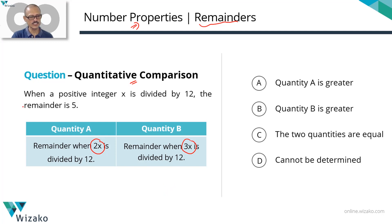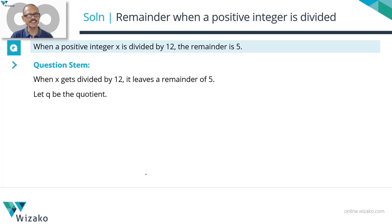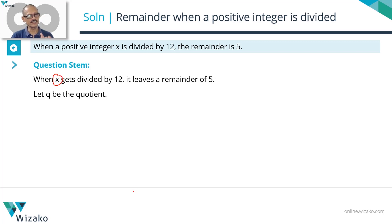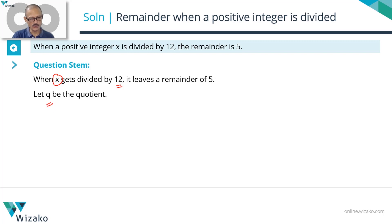The question stem tells us that when a positive integer x gets divided by divisor 12, the remainder obtained is equal to 5. In a division, there are four quantities to keep in mind: the number being divided, which is x; the divisor, which is 12; the quotient — not mentioned, so I'll assign it variable q; and the remainder, which is 5.